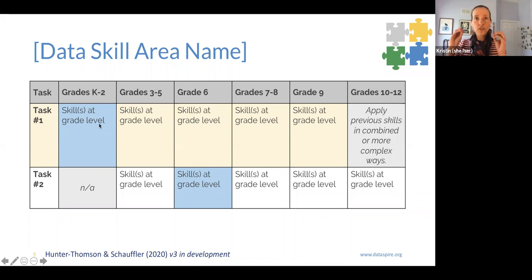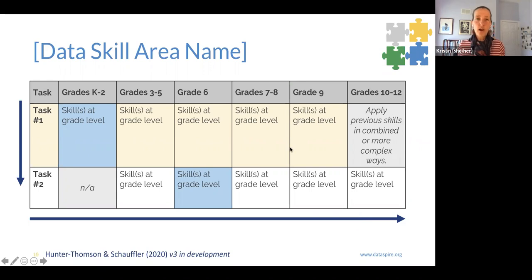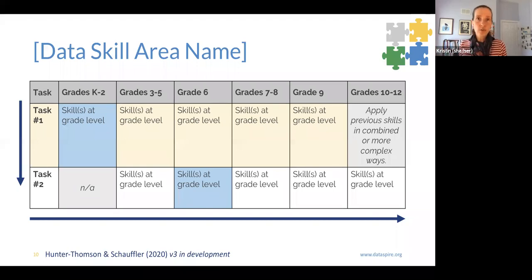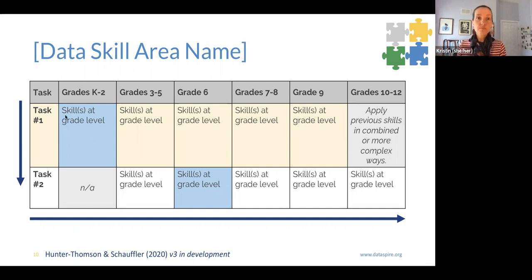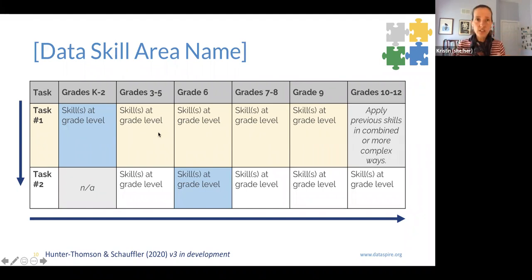Each row has a highlighted or keystone cell that's the key linchpin for getting that task — sometimes it shows up early, sometimes late. You can use this template in a couple of ways. You can read across a row to get a sense of how skills build over time across the K-12 sequence. You can also look down a column — for example, what should my third graders be working on and mastering by the end of fifth grade? What skills should they be coming in with? And where's my endpoint, where I hand off to my colleague who teaches sixth grade?